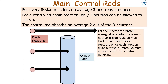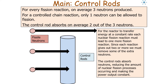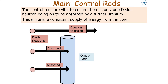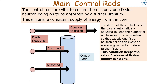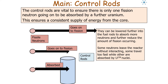For the reactor to transfer energy at a constant rate, each nuclear fission reaction must lead to one more fission reaction. Since each reaction gives out two or more neutrons, the control rod absorbs neutrons, reducing the amount of nuclear fission occurring and making the power output constant. The depth of the control rods in the core is automatically adjusted to keep the number of neutrons constant — exactly one fission neutron per fission event, on average, goes on to produce further fission. We can lower the control rods further to absorb more neutrons and reduce fissioning, and note that some neutrons also leave the reactor or are absorbed by uranium-238.